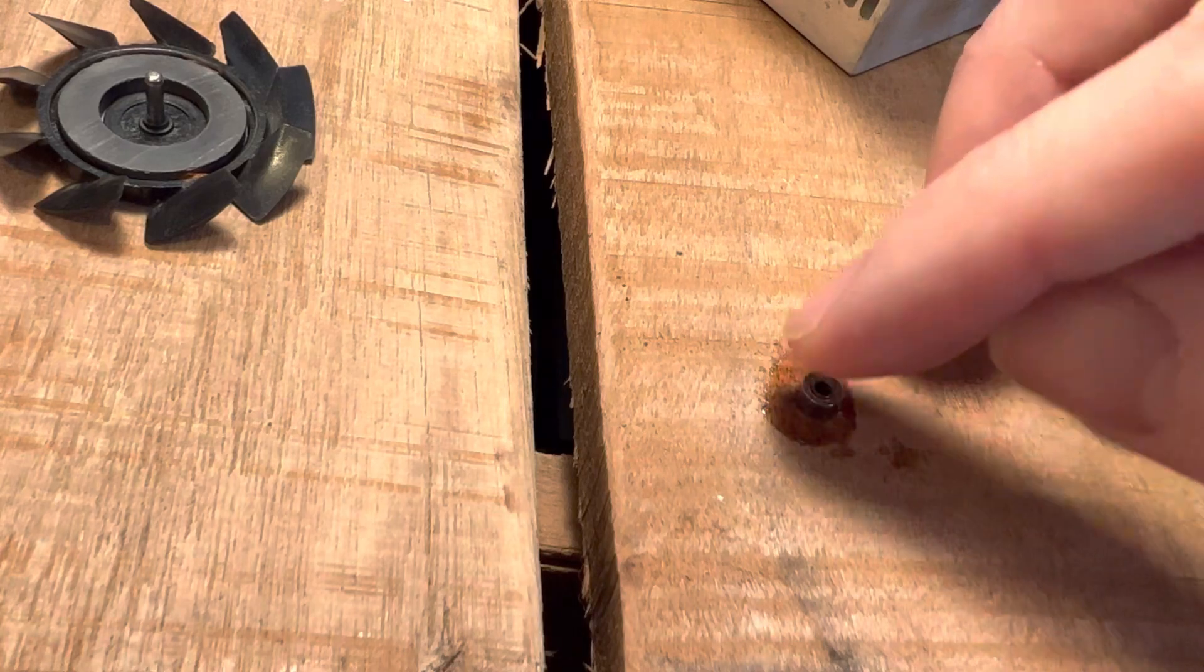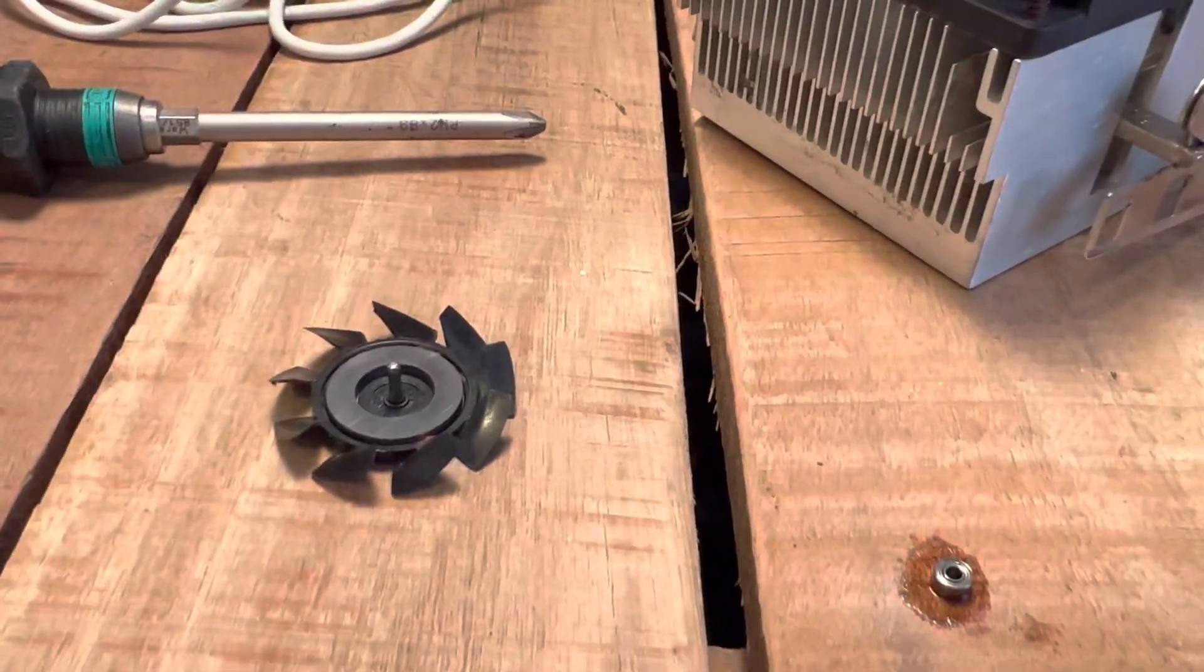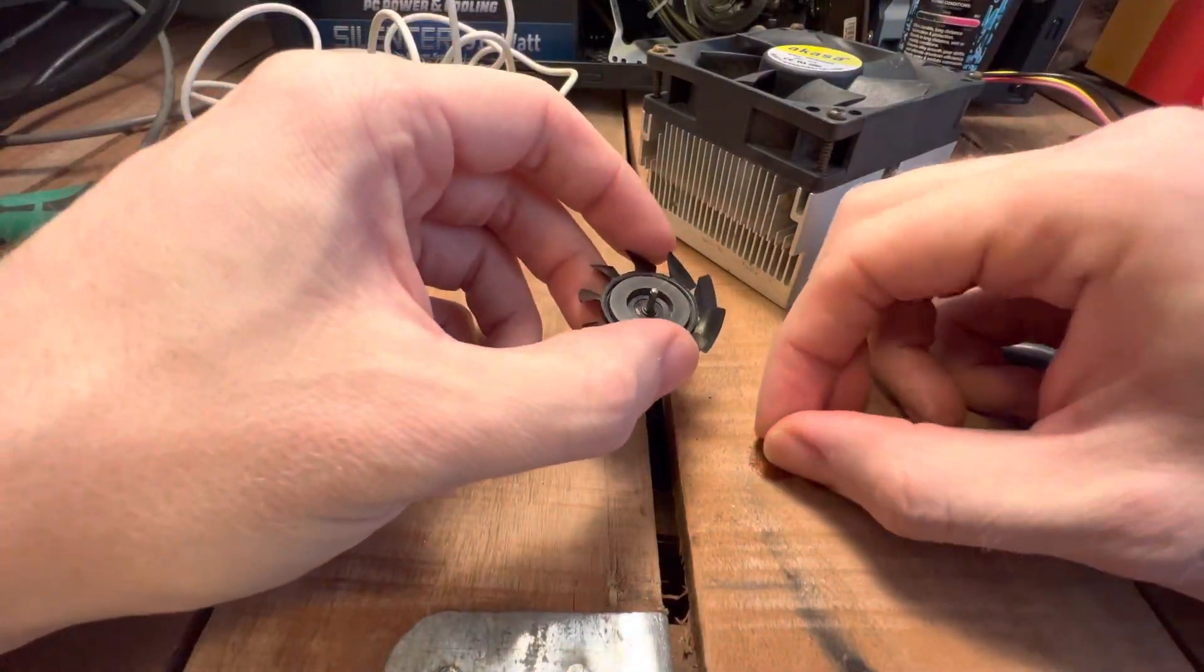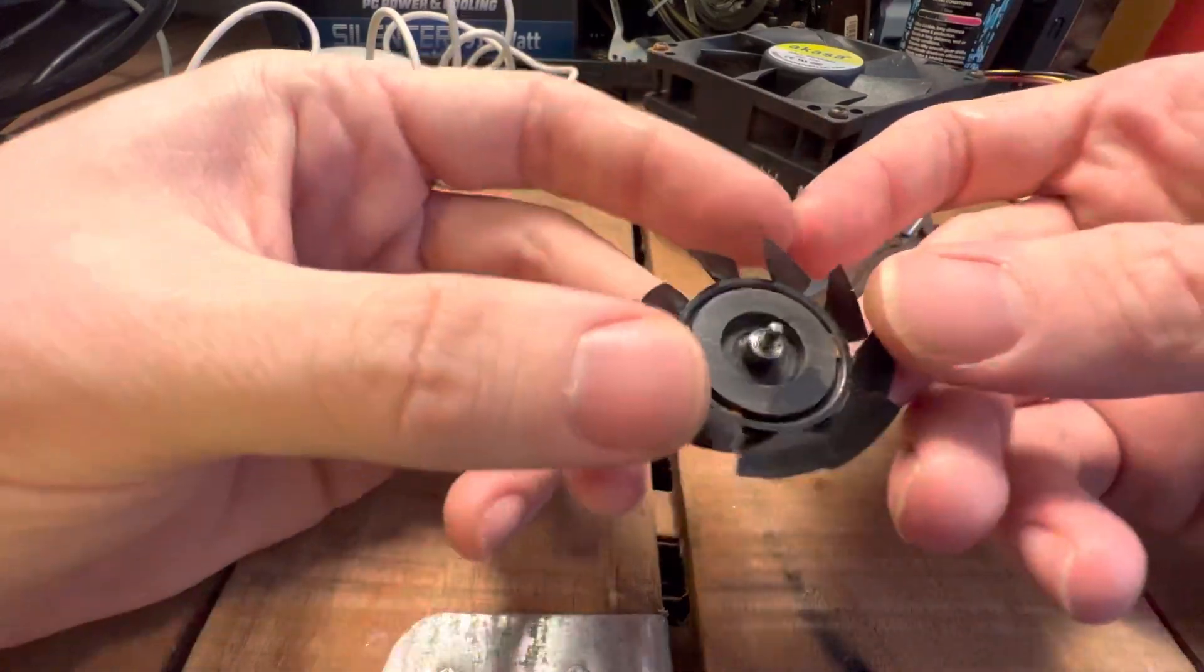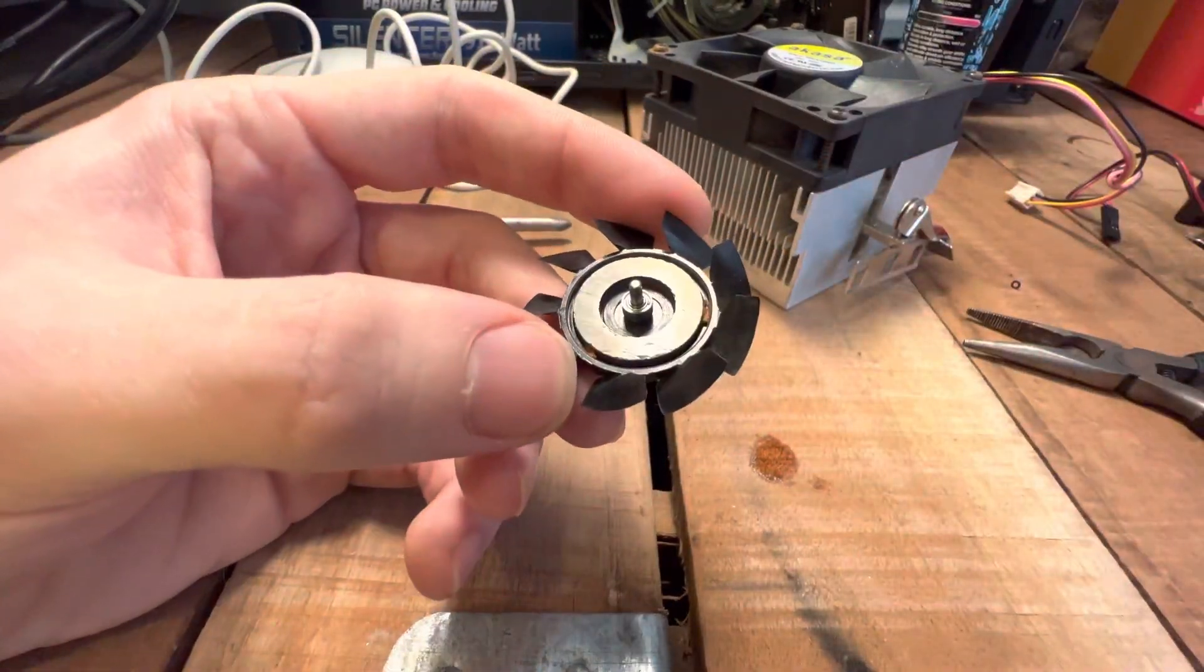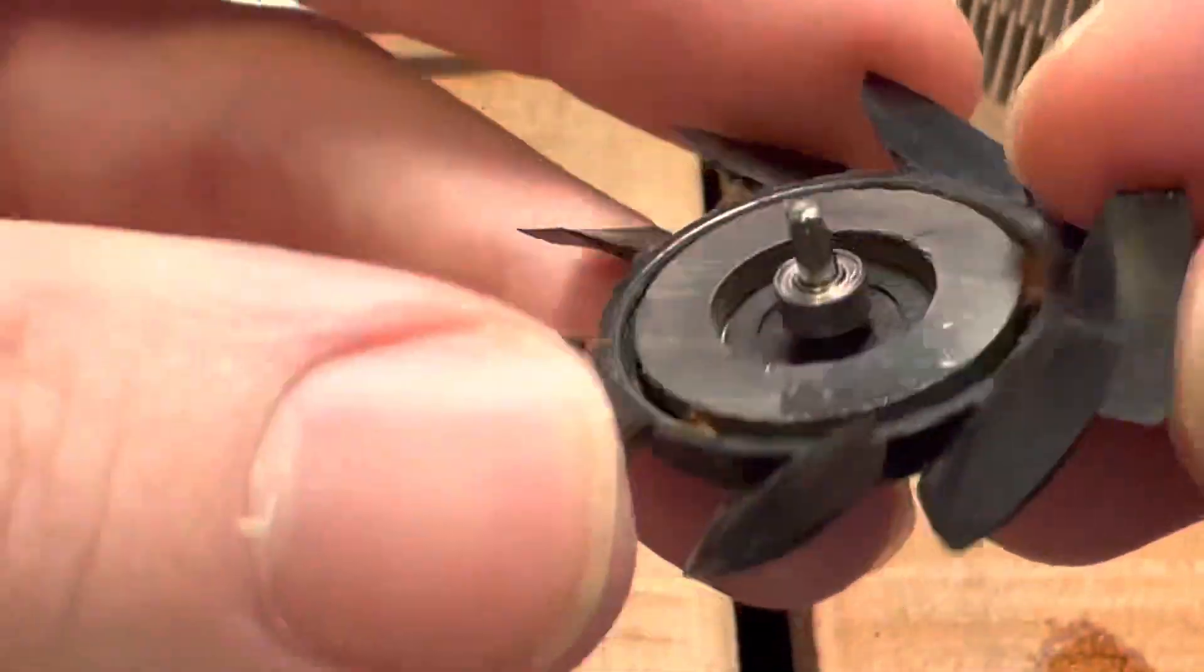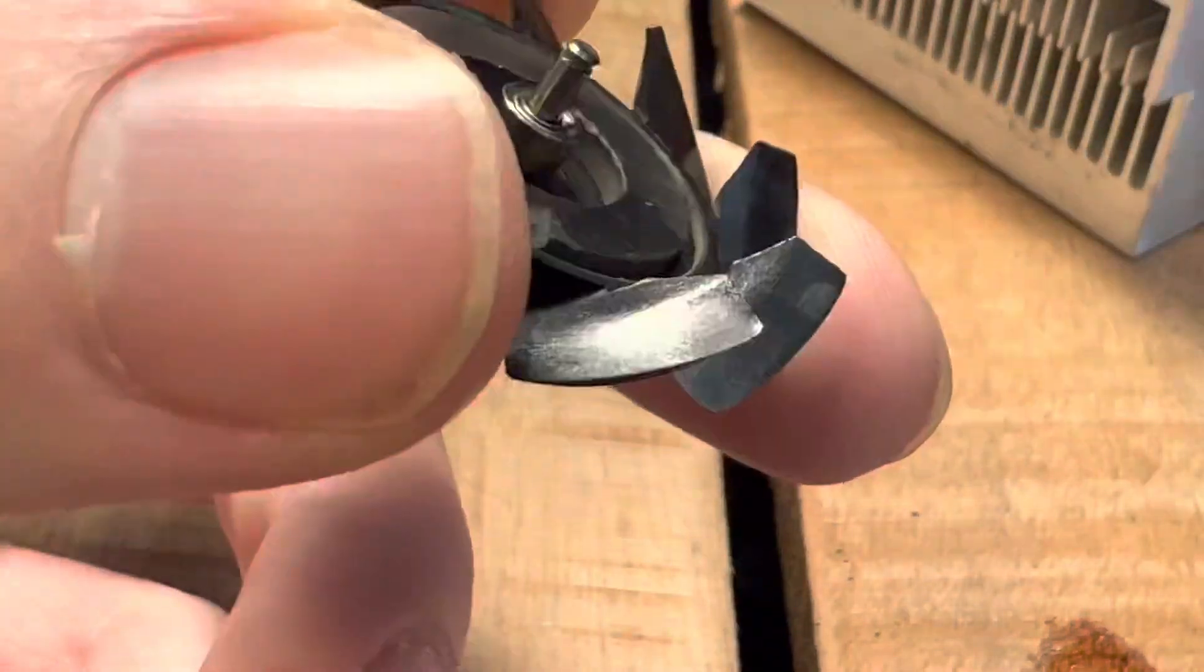That should do it basically. So what we'll do now is put that back on the spindle here. Now you only really need a drop. We can put another drop on there if we wanted to, and just make sure the magnet's clean.